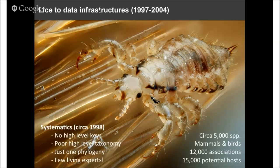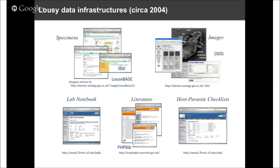When I started working on this group, we really didn't know very much about the systematics of them at all. There were no keys, very poor taxonomy, and just a single phylogeny of the group. So as a consequence, I started to compile various sources of information about this group electronically with colleagues. We started to build various web-based tools where we could collectively compile all sorts of information about lice — tools like Louse Base for managing louse collections, a lab notebook for recording primers and DNA sequences, literature and image management tools, and a host-parasite checklist for managing those thousands of associations. My reason for doing all of this was so that the research community could be more efficient, more collaborative, and more productive in our research on lice.